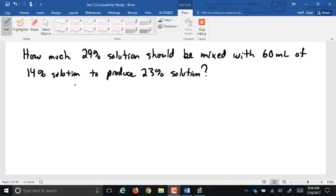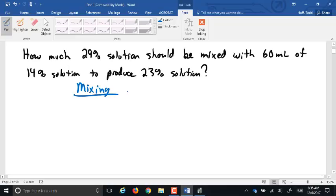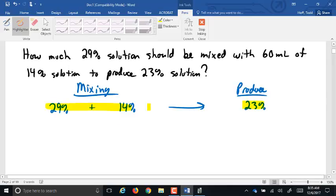So first thing we need to look at is what are we mixing? What two? 29% and 14%. Good. And we're mixing them to try to produce 23%. Now we had mentioned yesterday, is what we're trying to produce better be between the two things we're mixing? If it's not, it isn't possible.